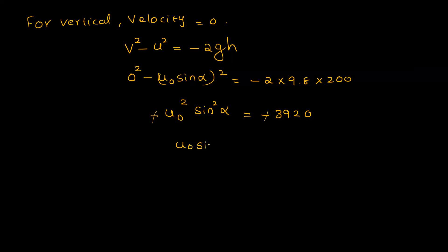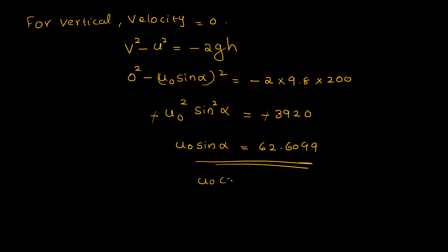So u0·sin alpha equals the square root of 3920, which is approximately 62.6099. This is equation number 1. We already have u0·cos alpha equal to 70, which is equation number 2.